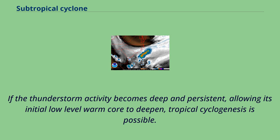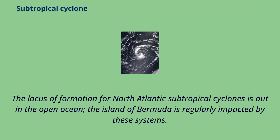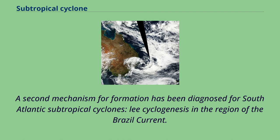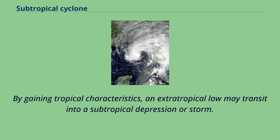If the thunderstorm activity becomes deep and persistent, allowing its initial low-level warm core to deepen, tropical cyclogenesis is possible. The locus of formation for North Atlantic subtropical cyclones is out in the open ocean, and the island of Bermuda is regularly impacted by these systems. The South Atlantic environment has both stronger vertical wind shear and lower sea surface temperatures, yet subtropical cyclogenesis is regularly observed there. A second mechanism for formation involves cyclogenesis in the region of the Brazil current, where an extratropical low may gain tropical characteristics and transit into a subtropical depression or storm.